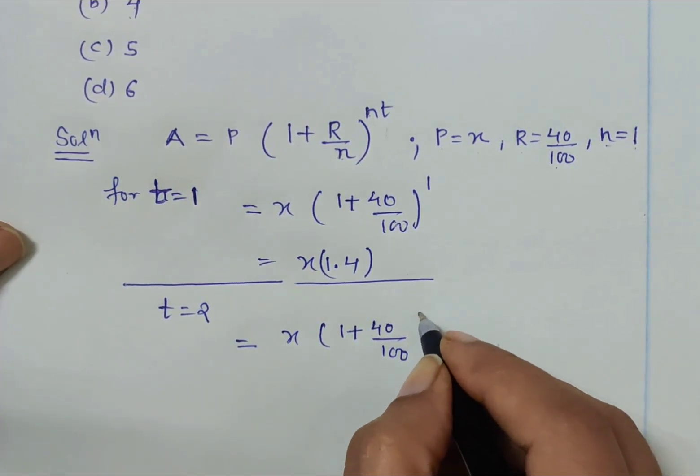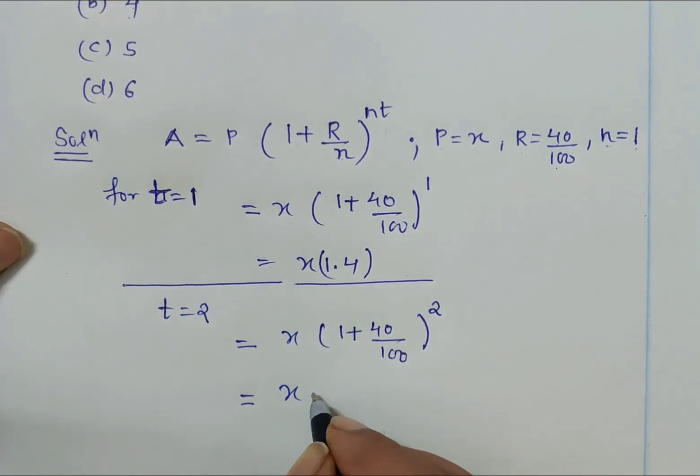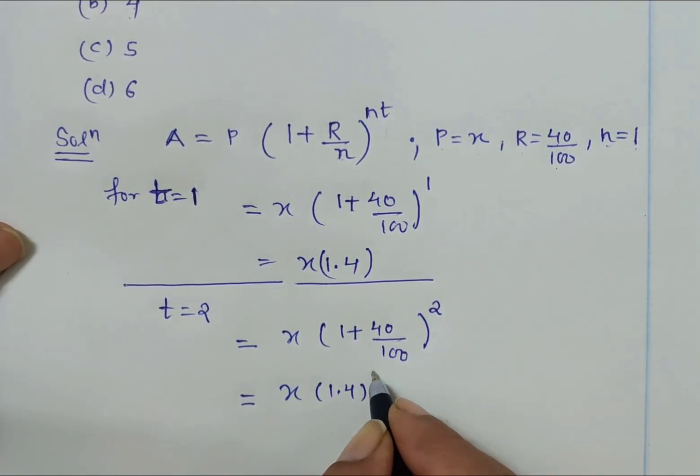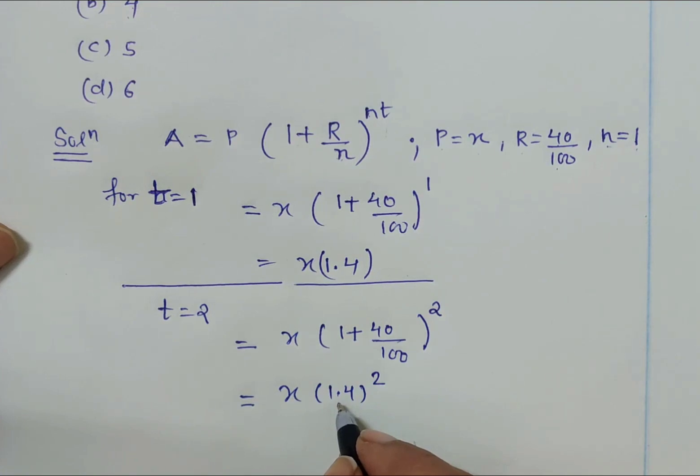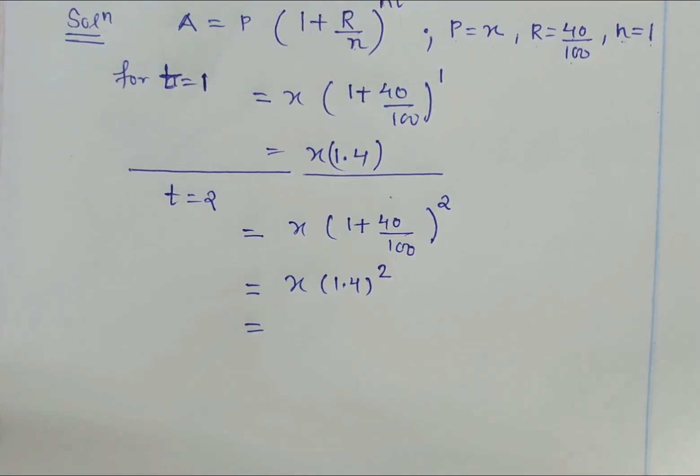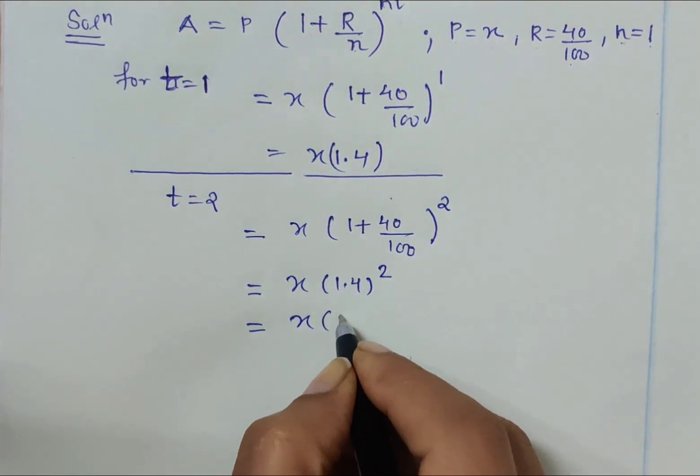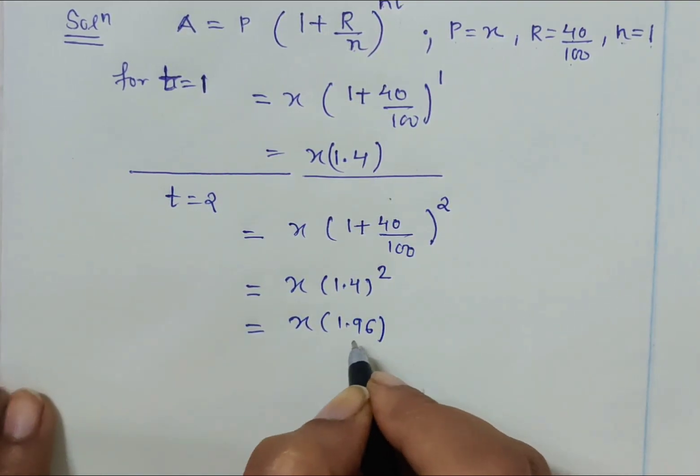This is x times 1.4 squared, and the square of 1.4 is 1.96. So we can write x times 1.96. It is still not tripled - the principal amount is still not tripled.